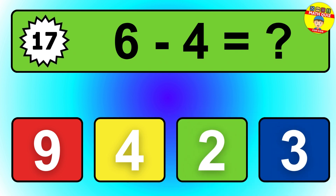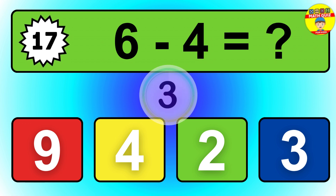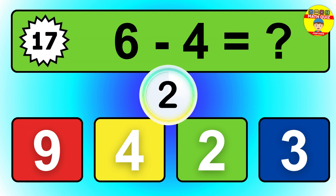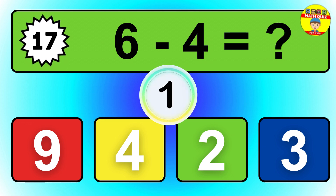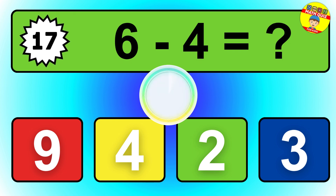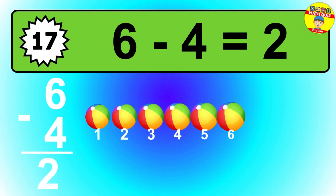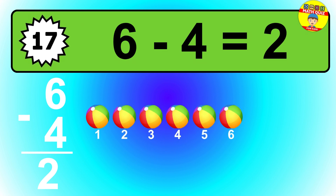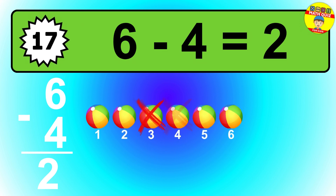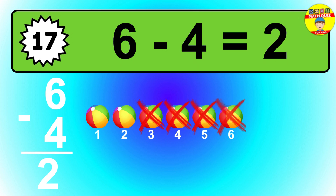Question 17. 6 minus 4 equals what? So the answer is 6 minus 4 is 2. Let's count it: 1, 2.